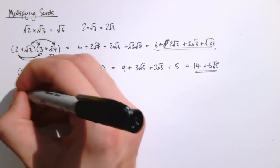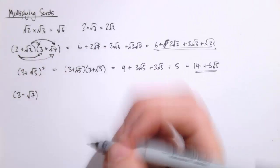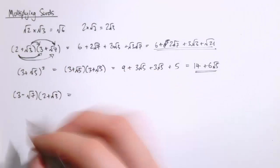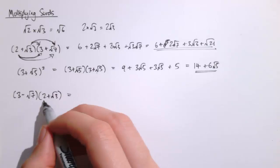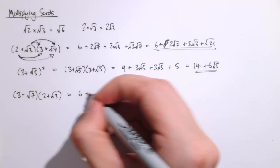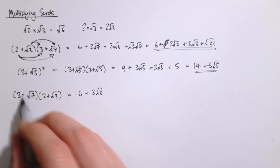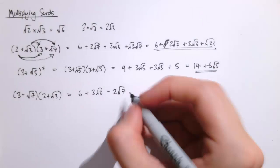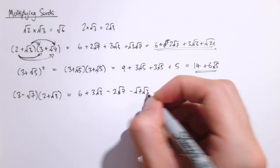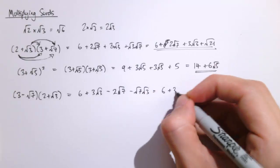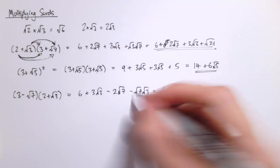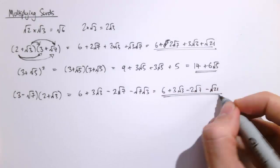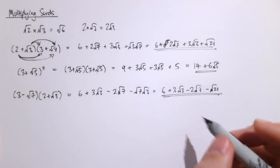When adding in negatives, we just have to be careful with all of the signs. So for 3 minus root 7 times 2 plus root 3: 3 times 2 is 6, 3 times root 3 is 3 root 3, then minus root 7 times 2 gives minus 2 root 7, and minus root 7 times root 3 we rewrite as minus root 21. So the final answer is 6 plus 3 root 3 minus 2 root 7 minus root 21.